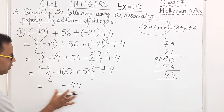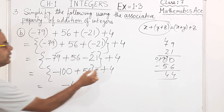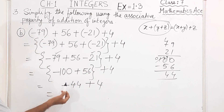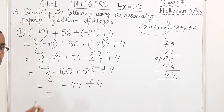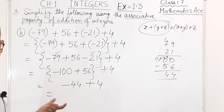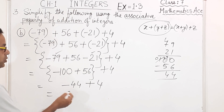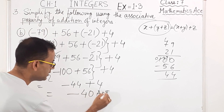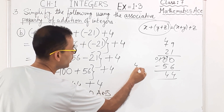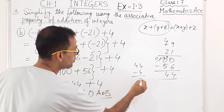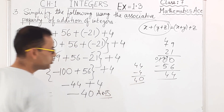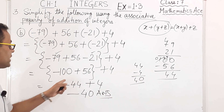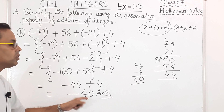Now: (-44) + 4. Different signs, so subtract: 44 - 4 = 40. 44 is bigger and has the minus sign, so the answer is minus 40.